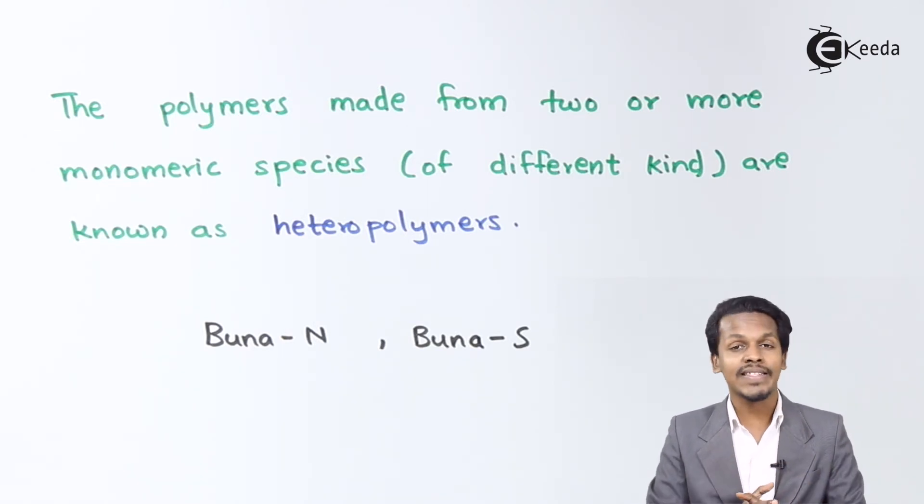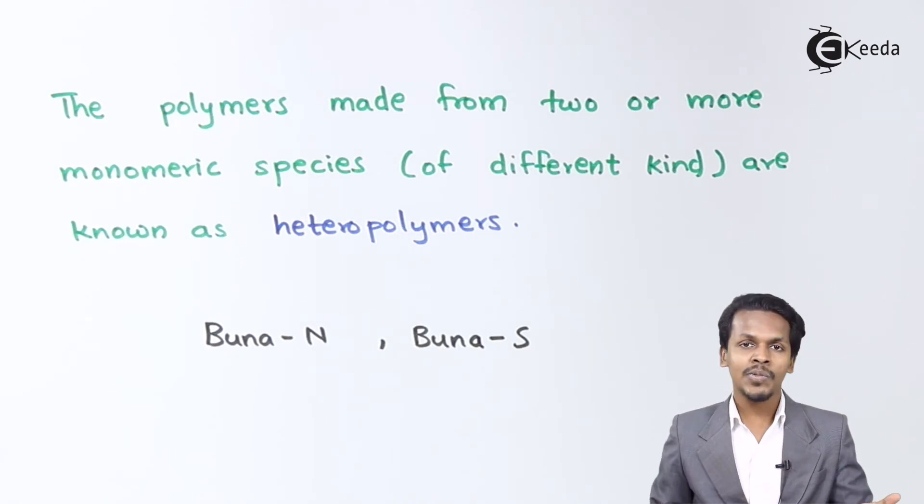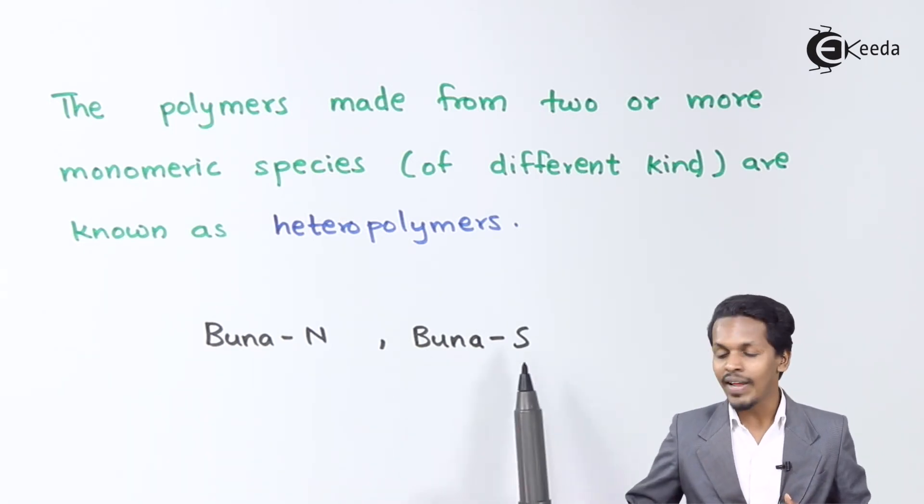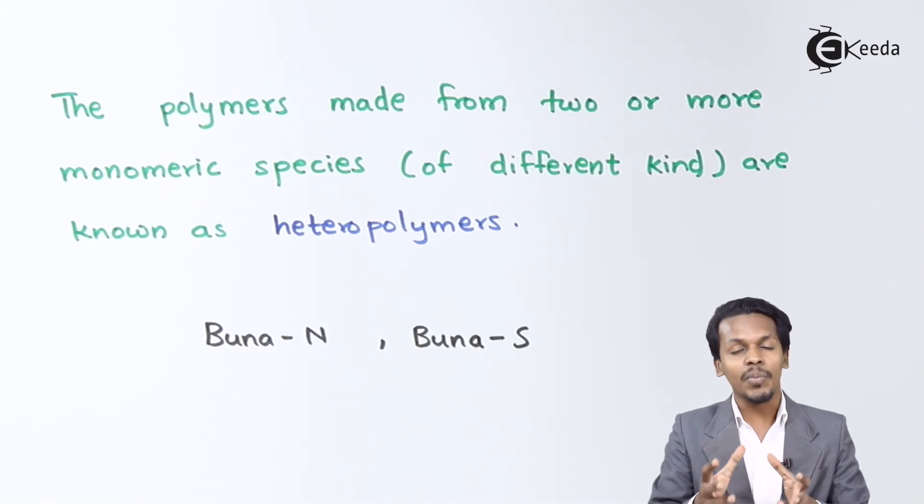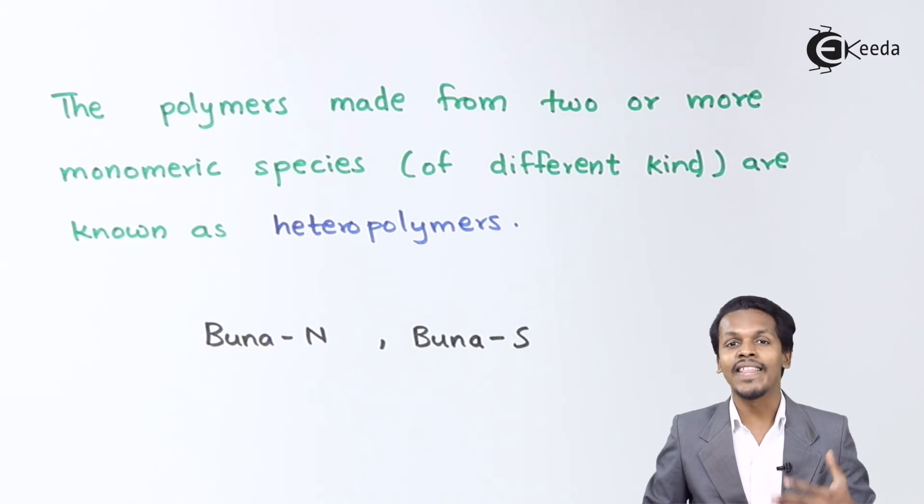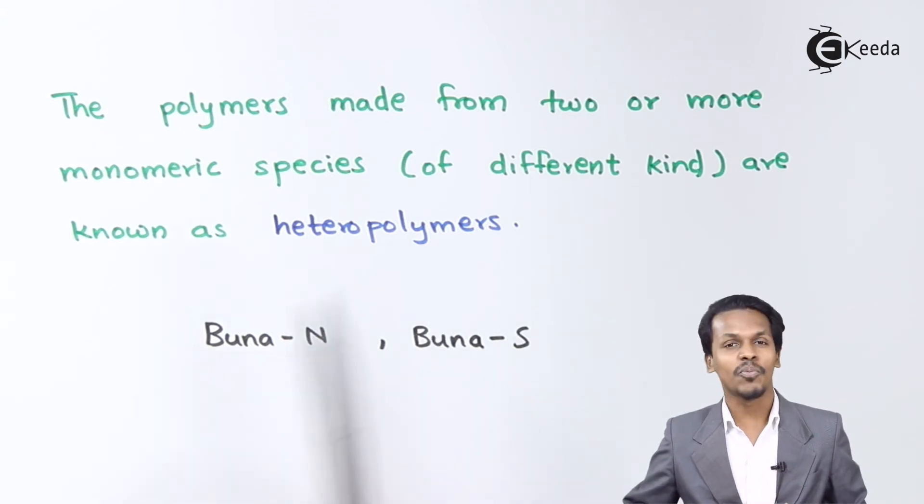In Buna S as well as in Buna N, the monomers that are being used - as the name suggests, Buna N means we are using butadiene as well as acrylonitrile. In case of Buna S, the monomers we are using to prepare Buna S is butadiene as well as acrylonitrile. The monomers are different from each other, and that is how the polymers are produced. Those polymers are called heteropolymers.